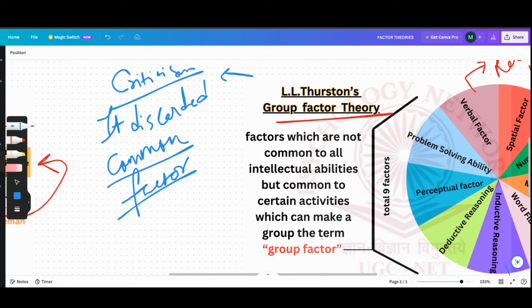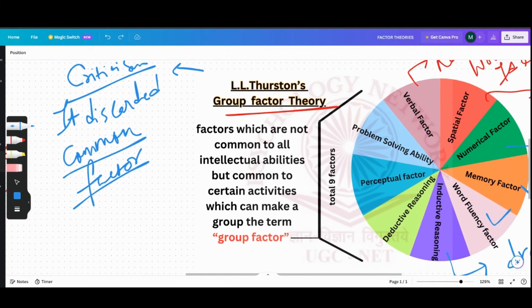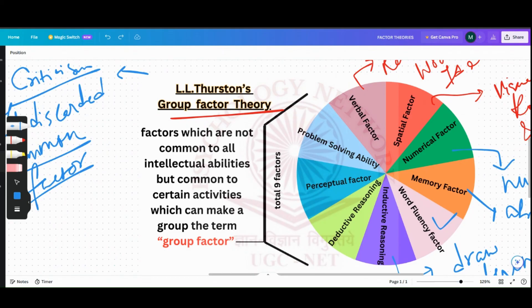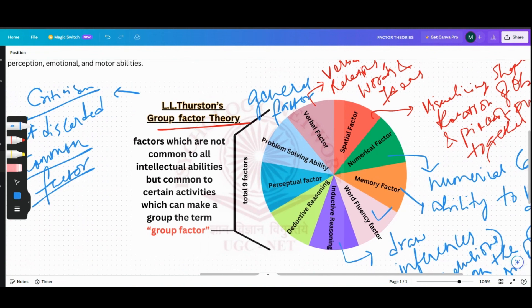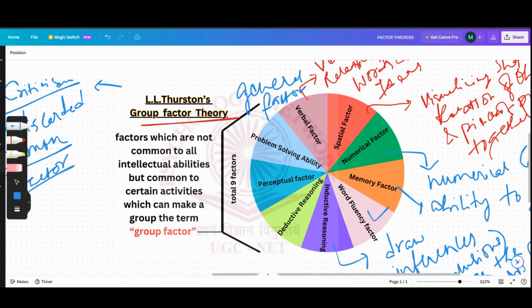But it did not actually take long for Thurston to realize that it was a mistake, and he did reveal a general factor in addition to all the group factors. So this was your Thurston's Group Factor Theory. If you have any queries or problems, then you can leave a comment down below or email me. Thank you so much for listening.